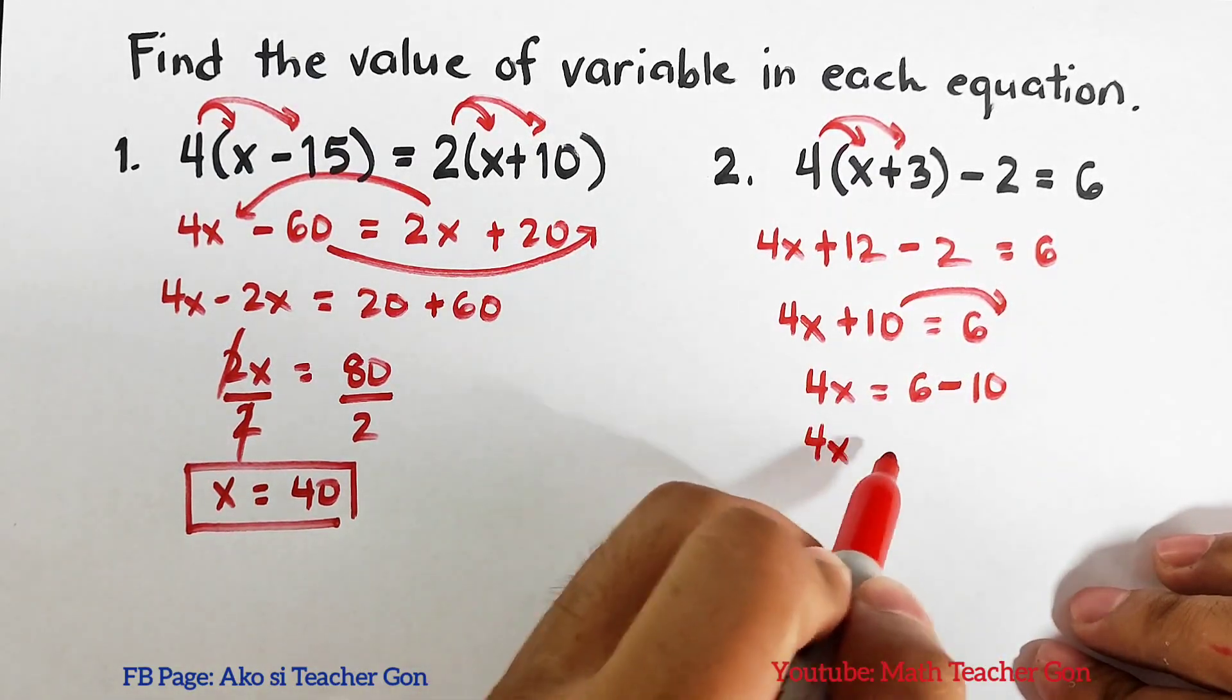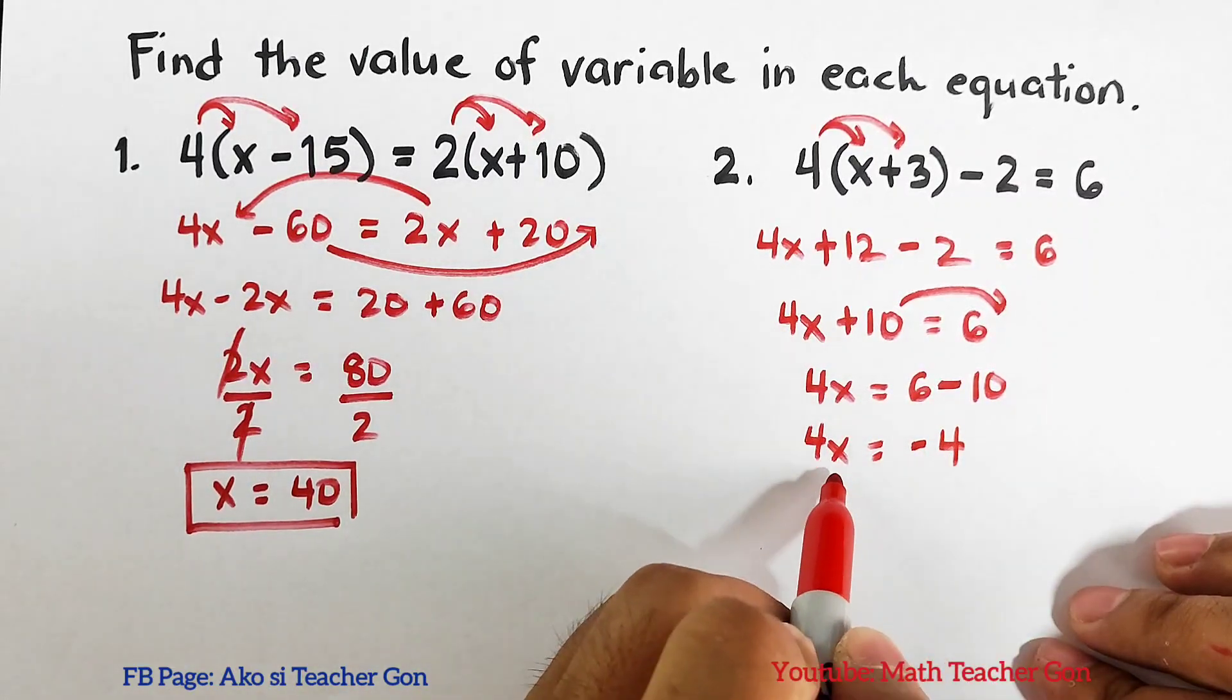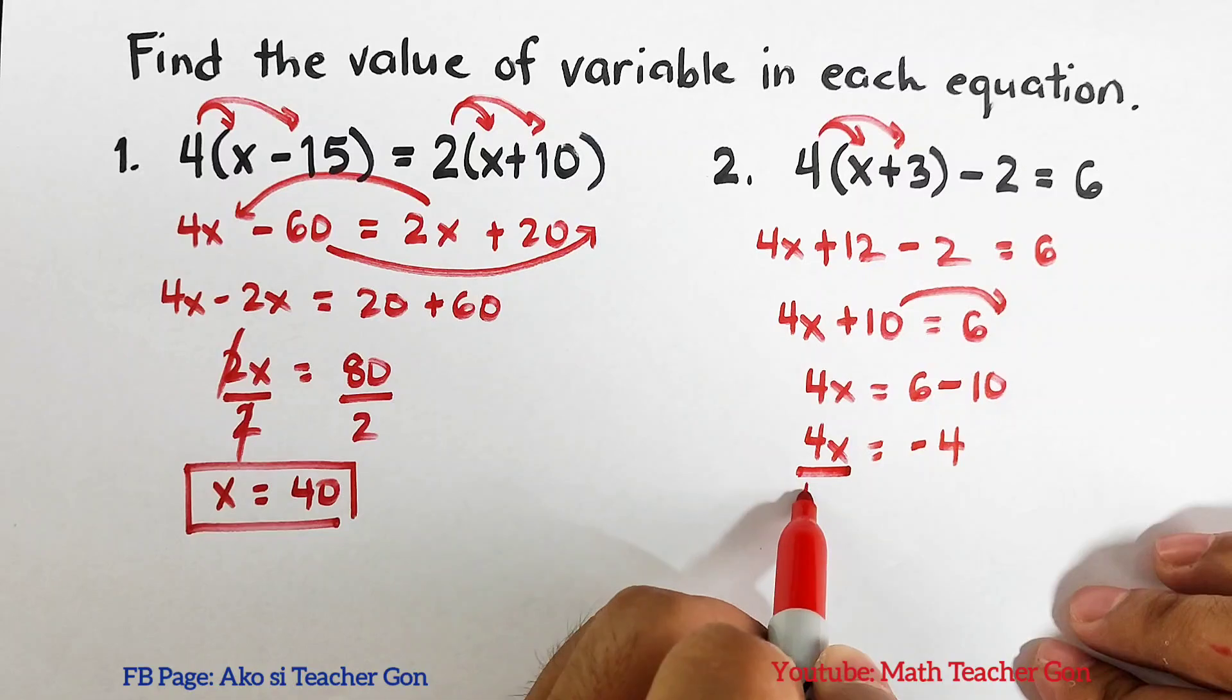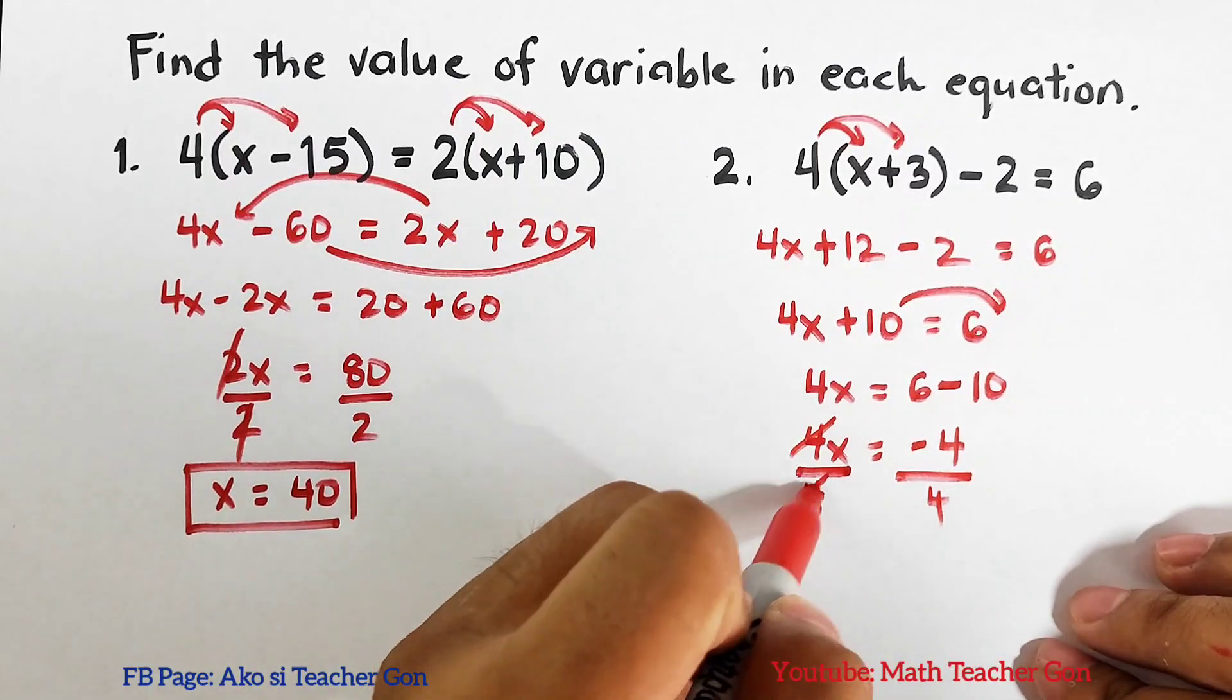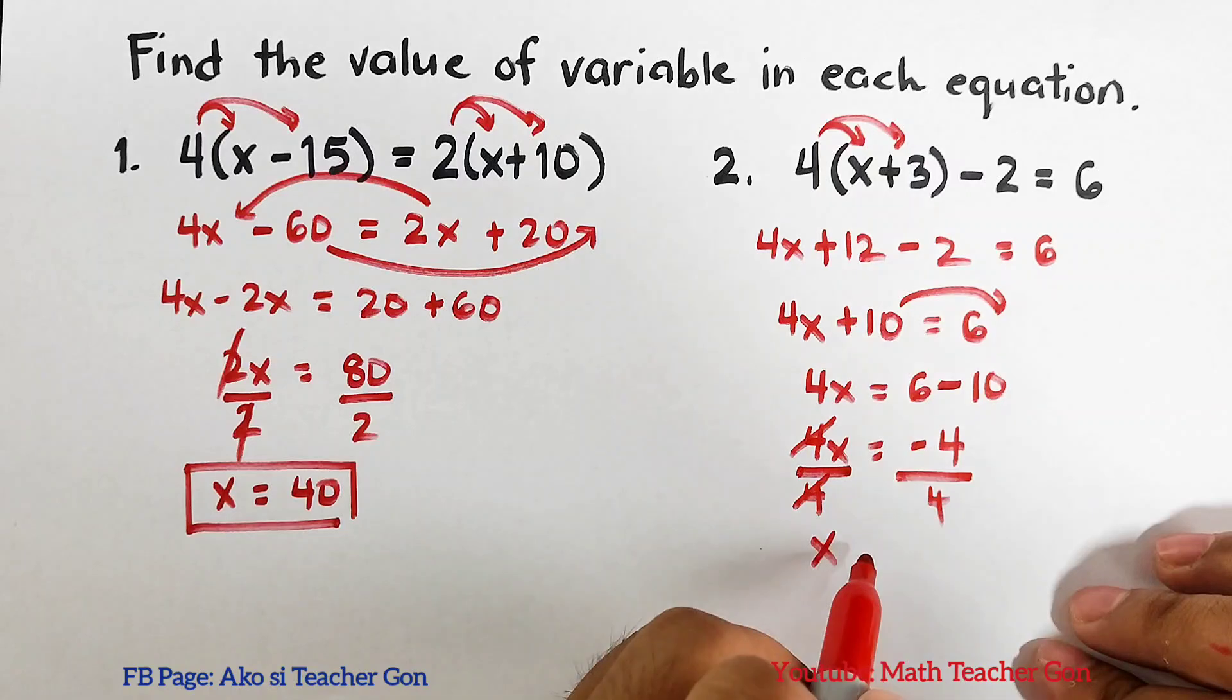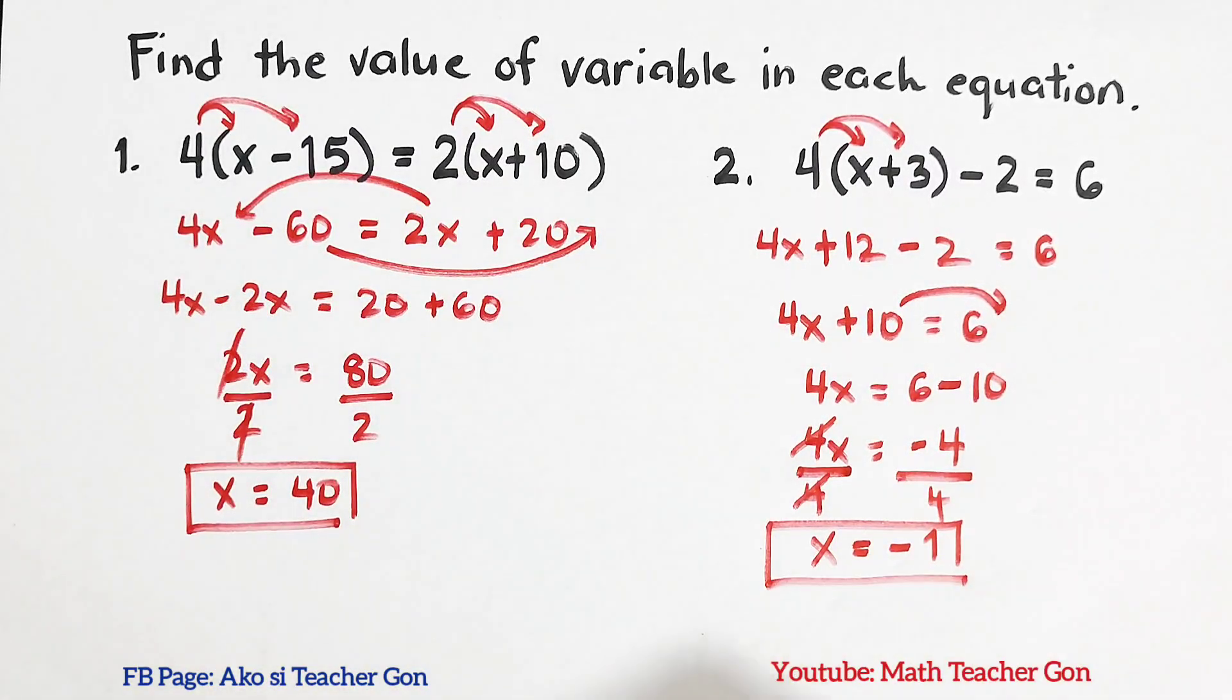So this is 4x is equal to negative 4, as 6 minus 10 is negative 4. And your divisor will be the number beside the variable. So this is, cancel, cancel, x is equal to negative 1. The value of x here is negative 1.